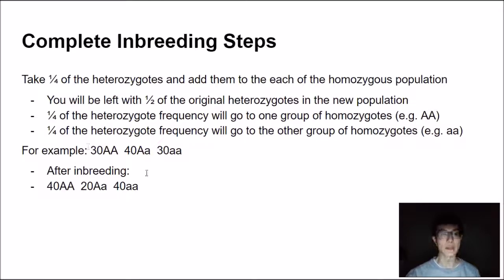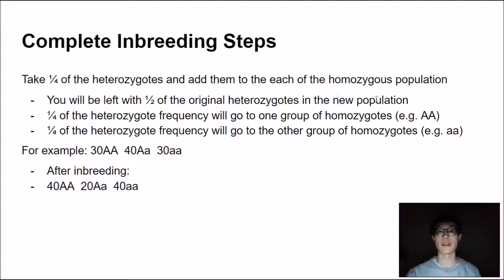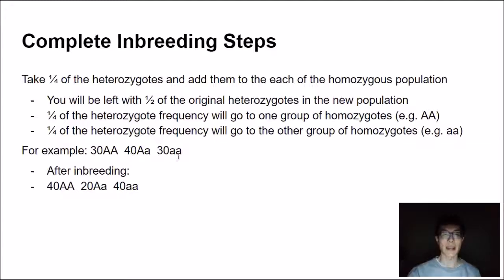Let's look at an example — it's easier to explain with one. We have a population of 30 AA, 40 Aa, and 30 aa. After complete inbreeding, you're left with one-half of the original heterozygotes: we had 40, so we're left with 20. We also take one-fourth of the heterozygote frequency for each homozygote group. One-fourth of 40 is 10, so 10 individuals are added to the AA group and 10 to the aa group. Visualize what happens with these descriptions and look at this example — it should make a lot of sense.